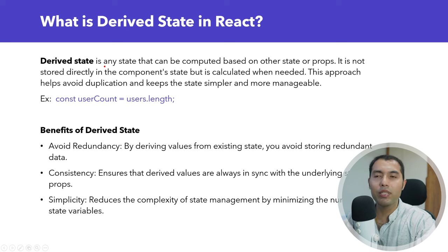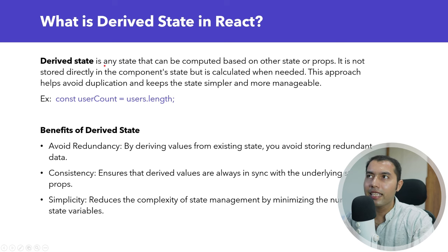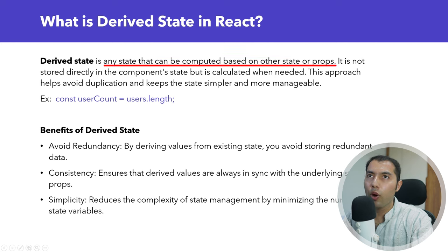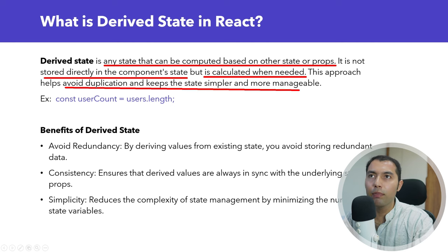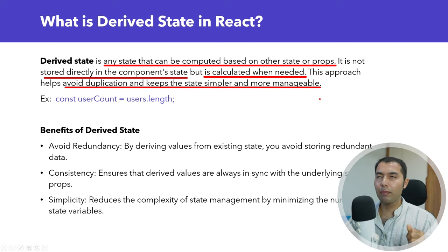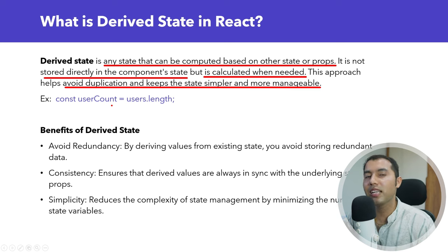So what is derived state? It is a state that can be computed based on other state or props. It is not stored directly in the component state, but it is calculated when needed. This approach helps avoid duplication and keeps the state simpler and more manageable. I will give you a simple example.